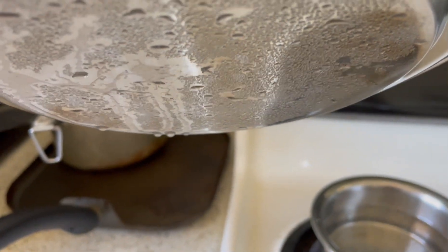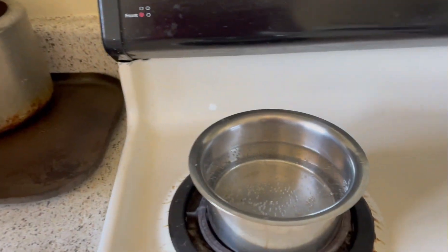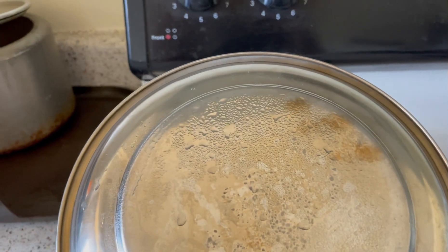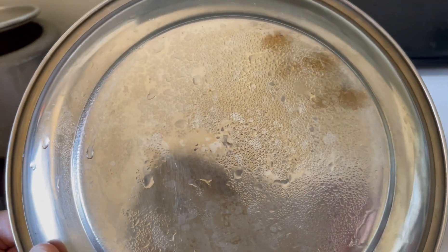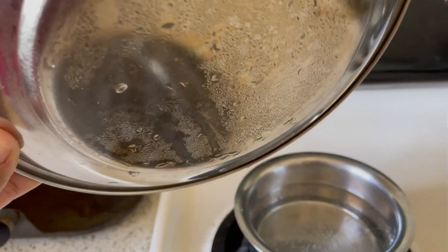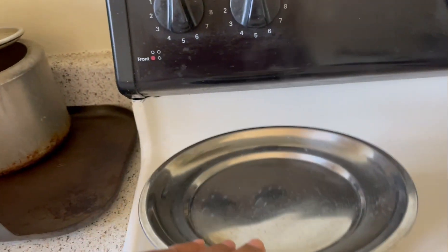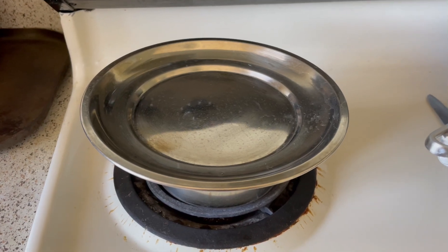The same happens in nature. Water from water bodies evaporates and condenses to form clouds like this. And then when the water droplets in the clouds become too heavy, they come down as rain and other forms of precipitation. This is called the hydrologic cycle.